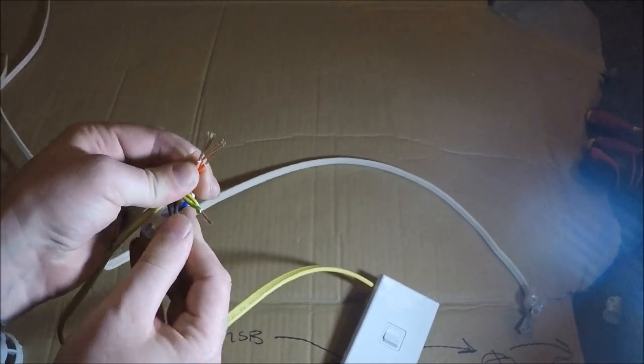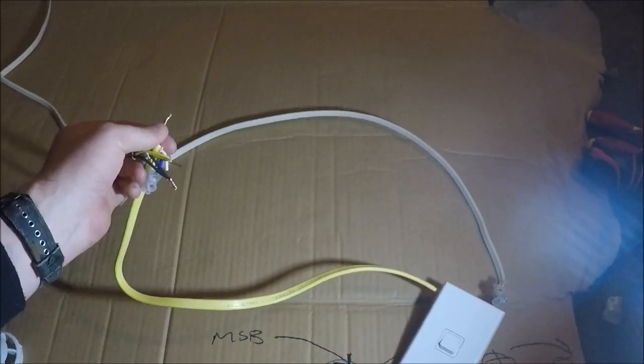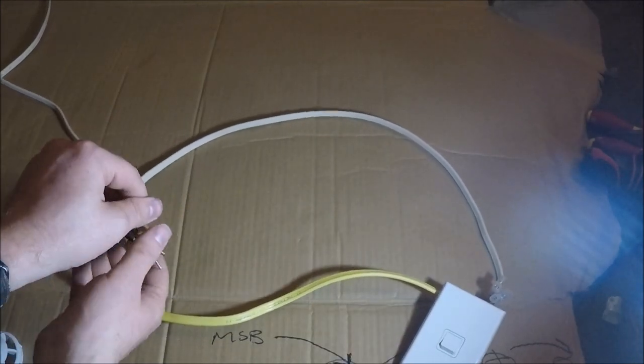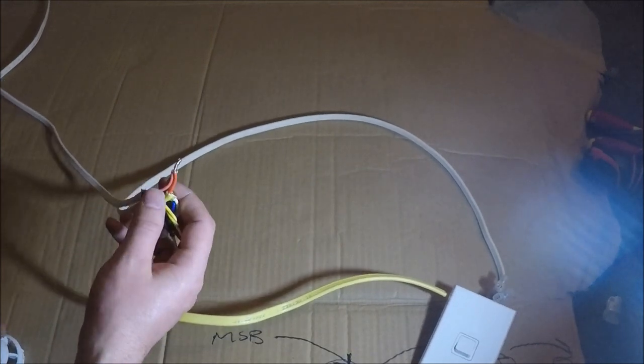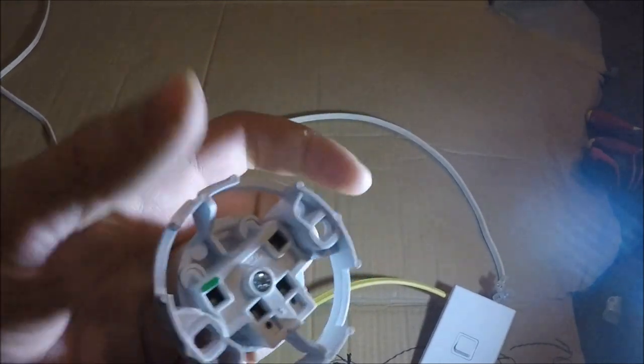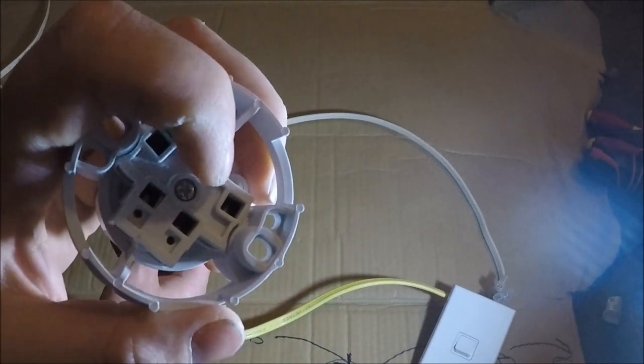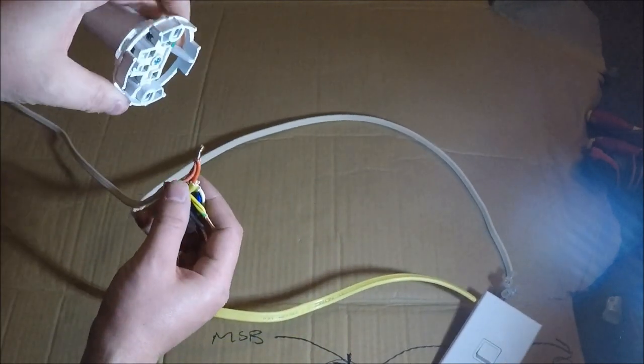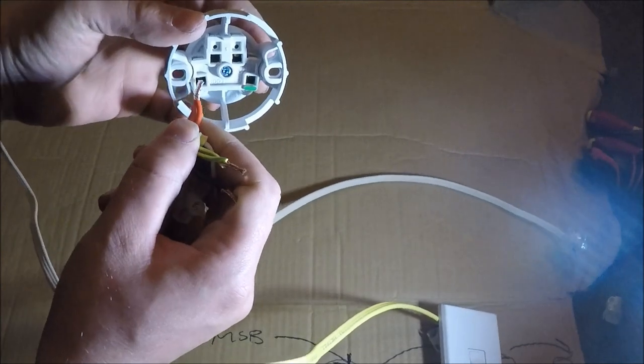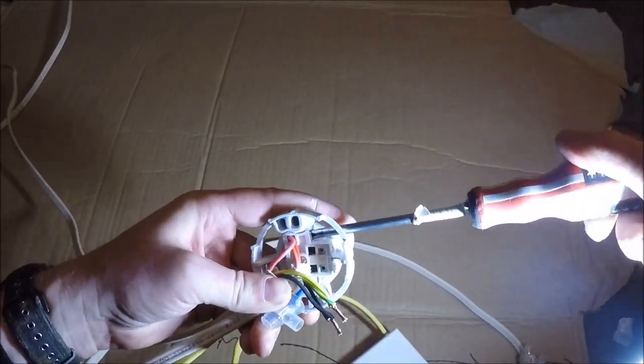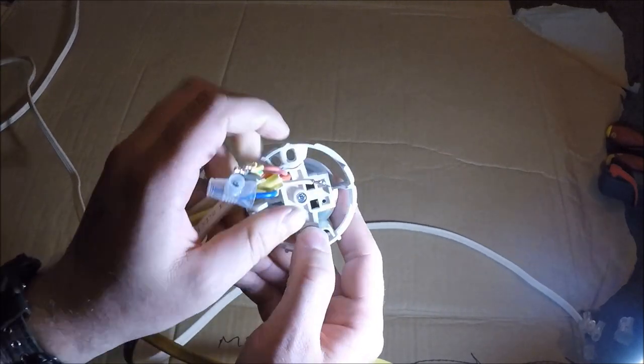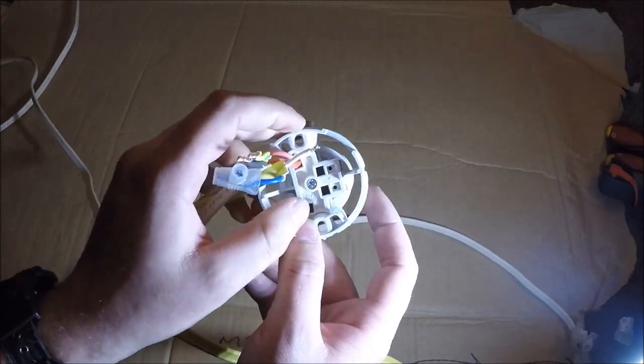So we'll twist the three of them together. Now those red cores are your feeds. They're not going to be part of the light fitting. So what we'll do with those is you'll see the loop terminal on the back here. We will screw the reds into the loop. So now we've got three more terminals on the back of the batten holder.